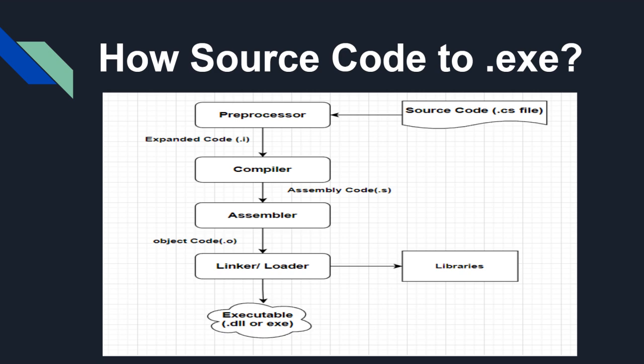Before going deep into .NET architecture, let us understand how source code is converted into an executable file. Source code written in C# or any other high-level language first goes through a preprocessor stage, where header files and imports are expanded to produce an expanded code. The preprocessor also optimizes the code by removing unwanted whitespace, new lines, and comments to produce an optimized expanded code.